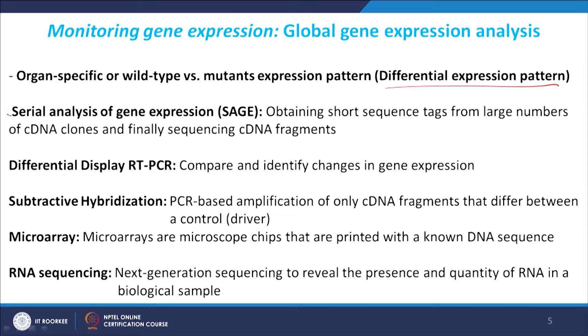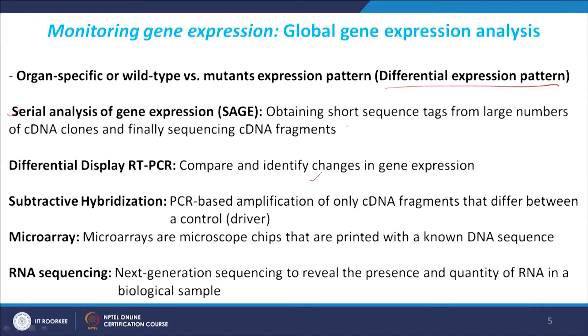Another way was differential display RT-PCR. Here, people would take two populations of total RNA, make cDNA, run a gel, and then try to identify which particular band is missing in one condition and present in another condition or vice versa. Then they would cut that band, amplify the fragment, clone, sequence, and identify the genes.